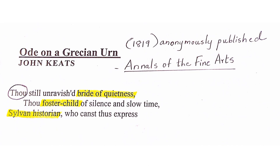The poem begins: 'Thou still unravished bride of quietness.' Since this is an ode, the poet is directly talking to the urn. 'Thou' means 'you.' The poet calls the urn the 'bride of quietness' because the urn never speaks — it is only a sculpture, it can never make any noise. It is always quiet. It is 'unravished' — meaning untouched, very pure, not yet married, innocent.